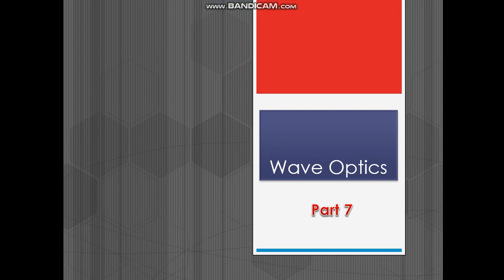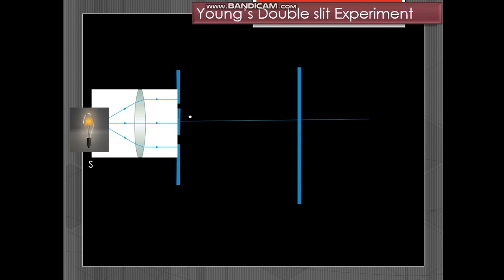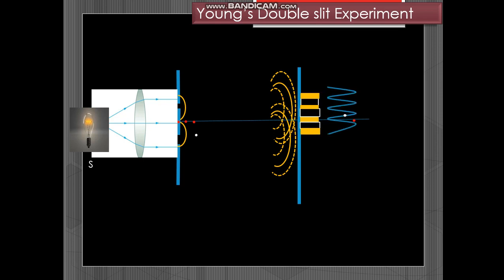Today we continue with wave optics part 7. We had learnt the Young's double slit experiment. We had two sources giving out spherical wave fronts which reaches the screen to produce the interference pattern.